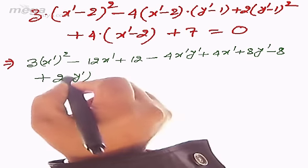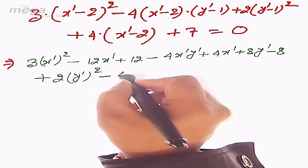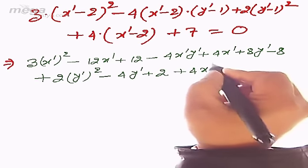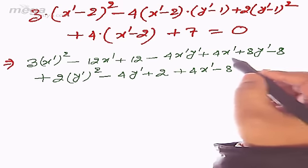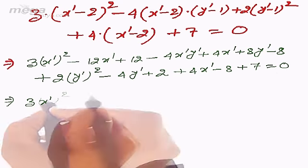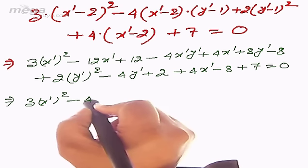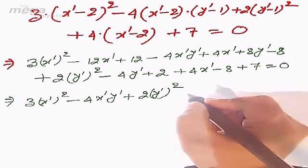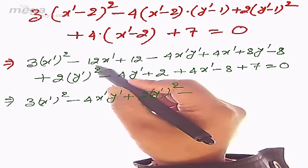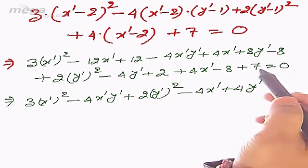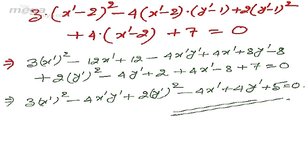Continuing to simplify: 2y'² - 4y' + 2 + 4x' - 8 + 7 = 0. Collecting all terms, the final equation becomes 3x'² - 4x'y' - 4x' + 4y' + 5 = 0. This is the equation of the same curve but expressed in the new coordinate system.